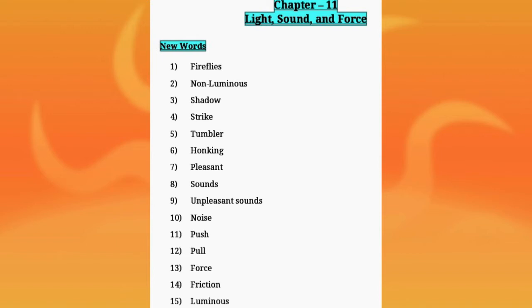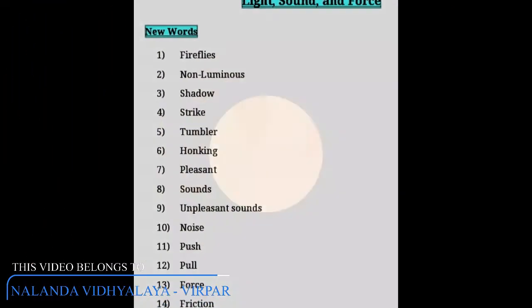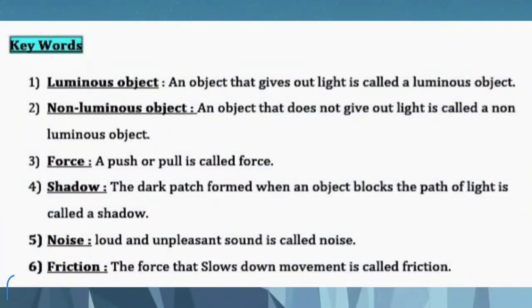Number 15: Luminous means jo light dete hain, jaisi ki Prakas ka Shroth. Keywords. Number 1: Luminous object — An object that gives out light is called a luminous object. Aisai object jo hume light dete hain, unko hum luminous object bolte hain. Number 2: Non-Luminous object — An object that does not give out light is called a non-luminous object.